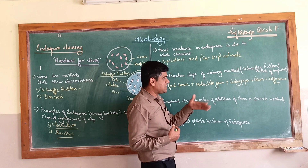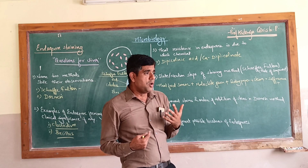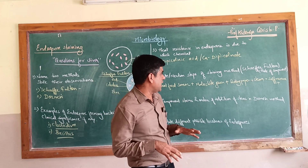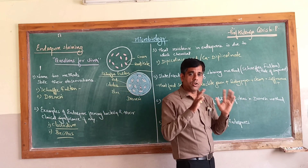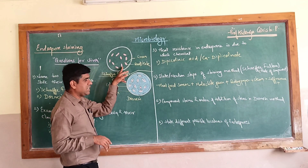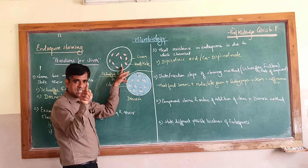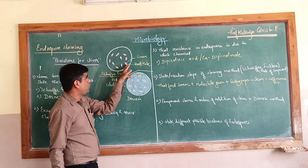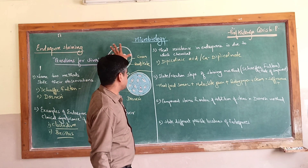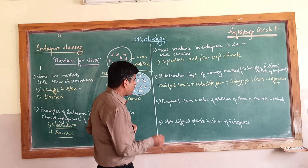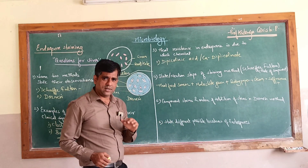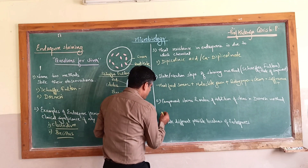When you wash it out, malachite green leaves the vegetative cell but not the endospore. Safranin then stains the vegetative cell, so you see vegetative cells stained red with safranin and endospores stained green with malachite green against a clear background.